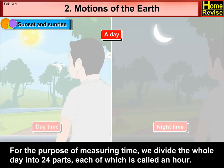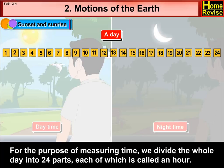For the purpose of measuring time, we divide the whole day into 24 parts, each of which is called an hour.